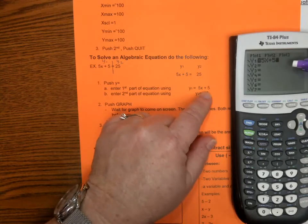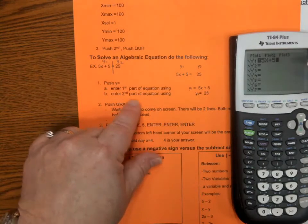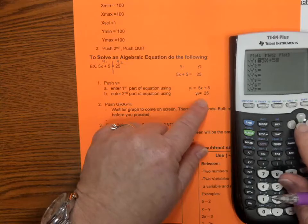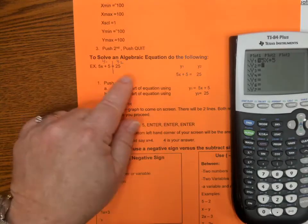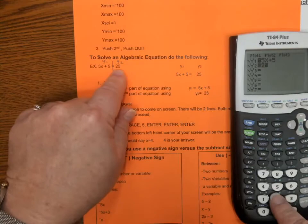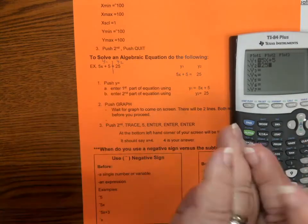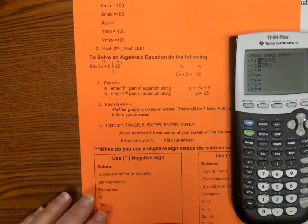It says enter the second part of the equation using Y2. So, the second part of my equation is 25. Just like I said before, it's like the railroad tracks. You've got two sides of your equation.